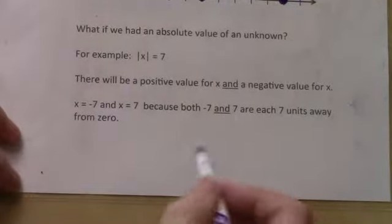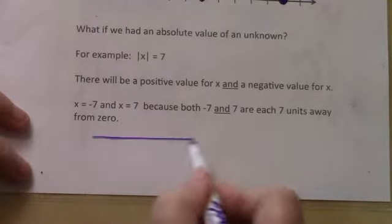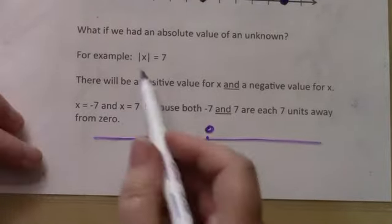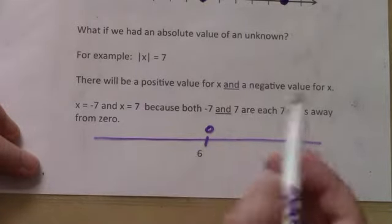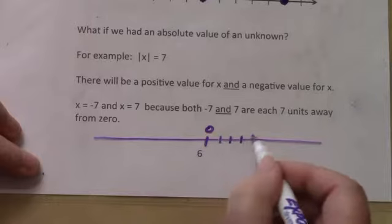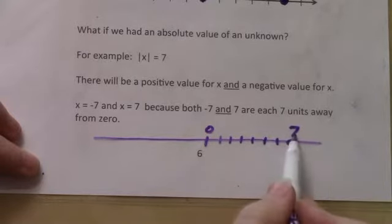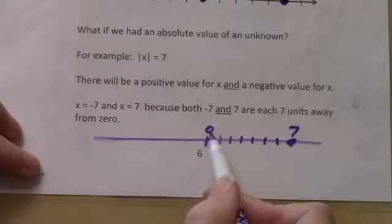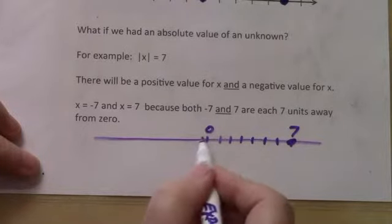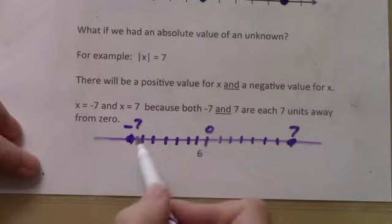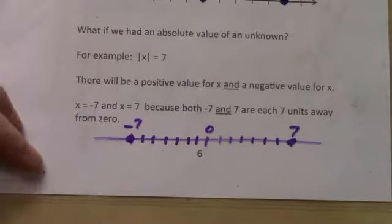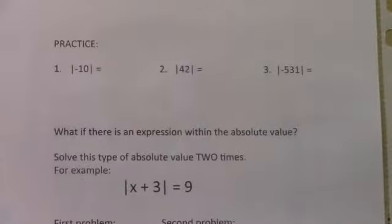Let's take a look at that on a number line. Here we have our 0. What could x be? Well, if x equals 7, it could be 7 away: 1, 2, 3, 4, 5, 6, 7. Positive 7 is 7 away from 0. But also negative 1, 2, 3, 4, 5, 6, 7 — negative 7 is also 7 away from 0.